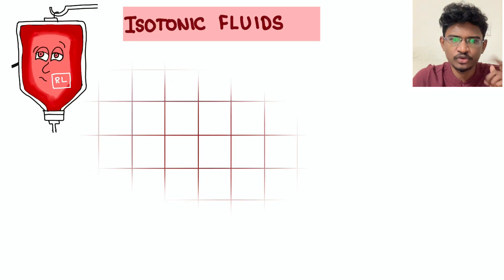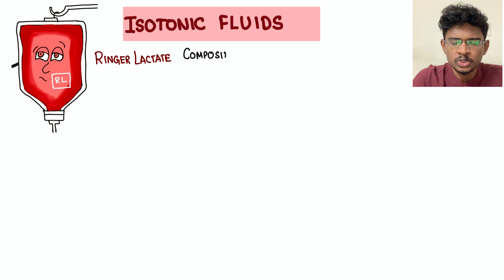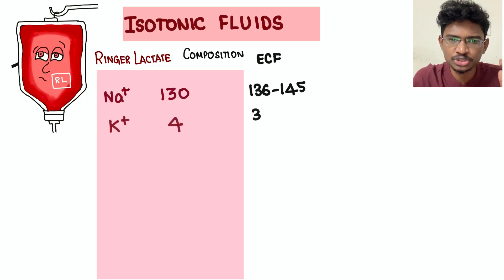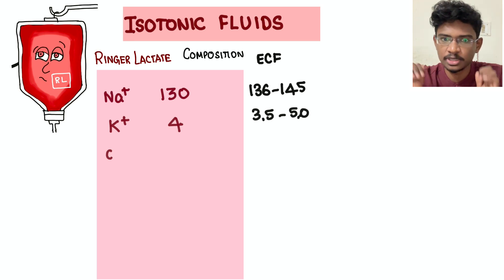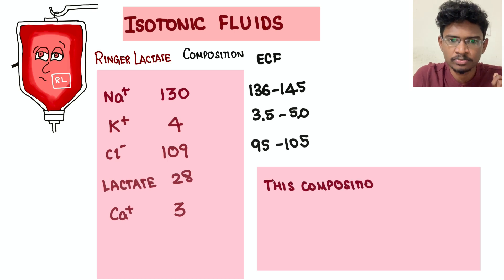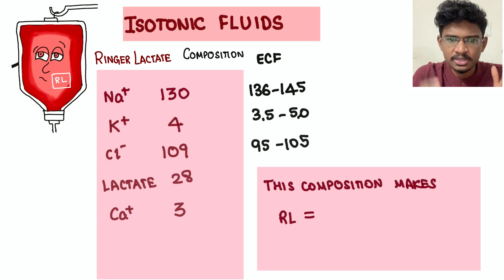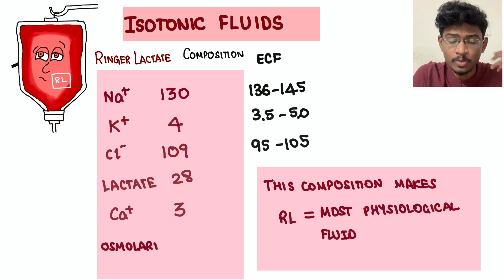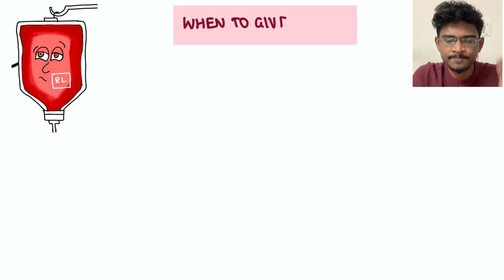The first isotonic fluid is Ringer's Lactate. Its composition closely resembles plasma: sodium 130 mEq/L (normal ECF is 136–140), potassium 4 mEq/L, chloride and lactate 28 mEq/L each, and calcium 3 mEq/L. Because it simulates the composition of plasma so closely, Ringer's Lactate is called the most physiological fluid, which is why it is preferred for post-operative patients and fractures.